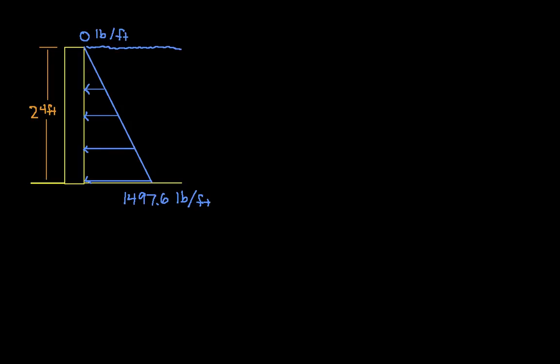The pressure as a function of depth, if I call h the depth, so I would start at a depth of zero and go down to a depth of 24 feet. The pressure as a function of h is gamma times h. Again, h is the depth, and gamma is the specific weight of the liquid, which in this case for water is 62.4 pounds per cubic foot.